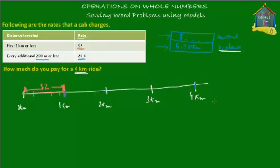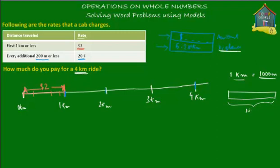Let's do some calculations. In one kilometer there are 1000 meters. We have to find out how many 200-meter parts are in 1000 meters. So you take your 1000 meters and divide it into 200-meter parts: 1000 meters divided by 200 equals five. So there are five 200-meter parts in one kilometer.